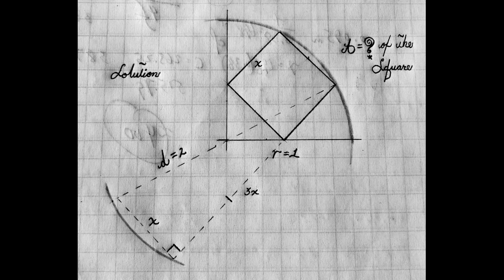And then all I did was go ahead and draw the diameter across from the corner of one square to the corner of the other. And that gives me a diameter of two.